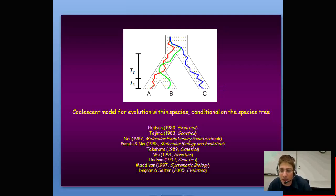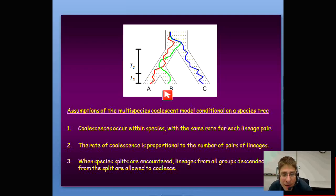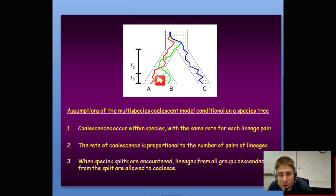The main properties of the model are as follows. Coalescences of gene lineages occur within species with the same rate for each lineage pair. The rate of coalescence within a particular population is proportional to the number of pairs of lineages. When species splits are encountered looking back in time, lineages from all groups descended from the split are allowed to coalesce. Within any one branch the greater the number of lineages, the faster a coalescence of a pair will occur. Whenever we encounter a split of two species, we allow lineages from all descended species a chance to coalesce along the branch above that split.